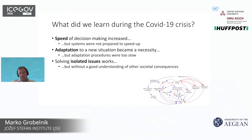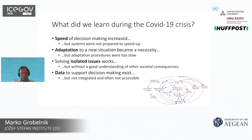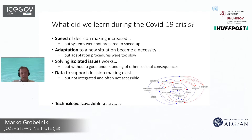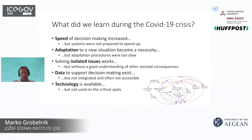Systems were required to adapt to new situations rapidly, but governance was not prepared for this fast adaptation. We are fairly good at solving isolated problems, but a holistic view of the complexity of society is something else — if we solve one problem we shouldn't harm others. Data to support decisions definitely exists but is typically not integrated and often not easily accessible, and technology is available but not used at the critical spots.